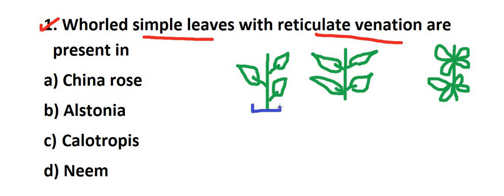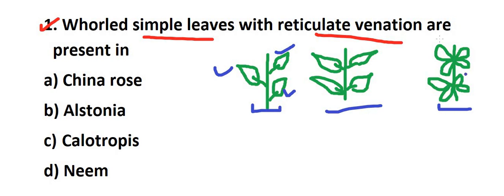Leaves can be alternate — arranged on alternate sides of the stem. Opposite leaves are arranged on opposite sides, two leaves per node. Whorled leaves have four to five leaves arising from the same node.